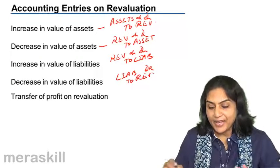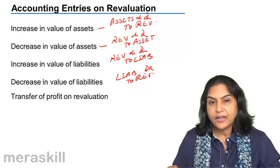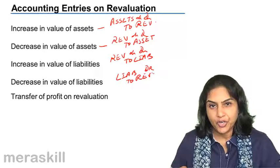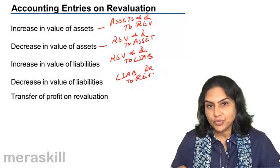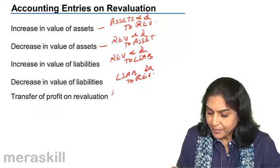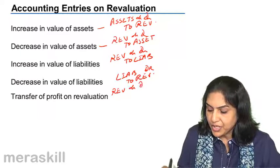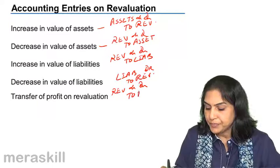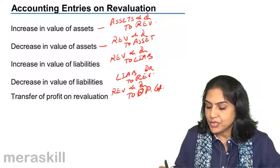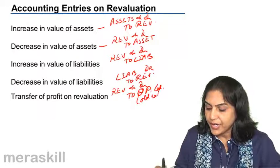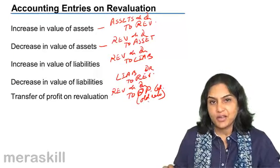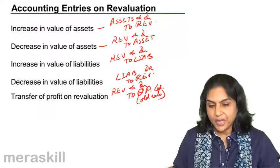The balancing figure in the revaluation account is either profit or loss, and it is transferred to the partner's capital account. So, if there is a credit balance, that is profit — revaluation account debit to old partner's capital accounts in old ratio. The entry is reversed in case of losses on revaluation.